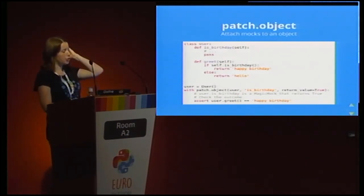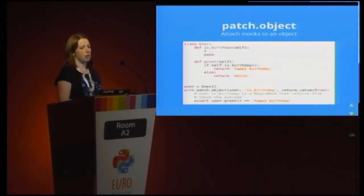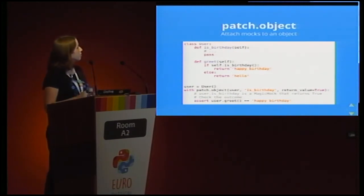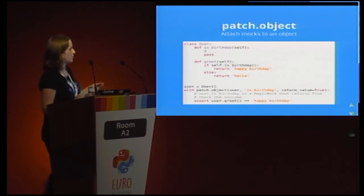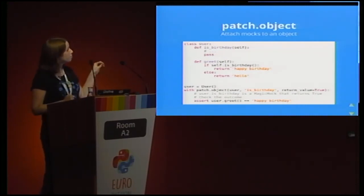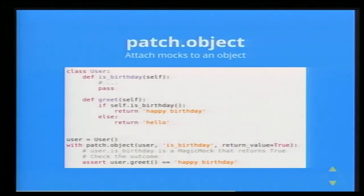Another useful thing is patch.object. You can use this to attach a mock to another part of an object you're already testing. For example, I've got a simple greet function on my User class that says happy birthday to the user if it's their birthday. I'm testing that function and want to mock is_birthday. I get a user object, patch it by passing in the object itself, the name of the method I want to patch, and the return value I want it to have. Inside that context, user.is_birthday is a MagicMock that will return True.